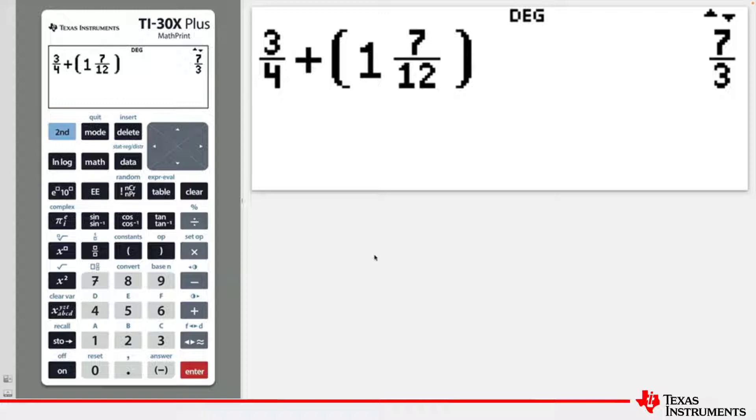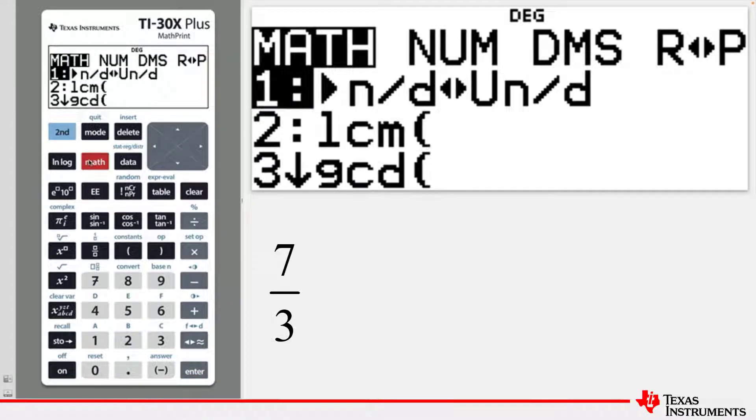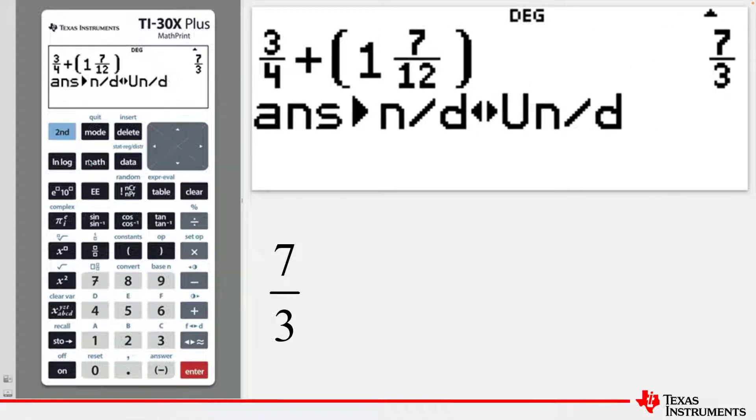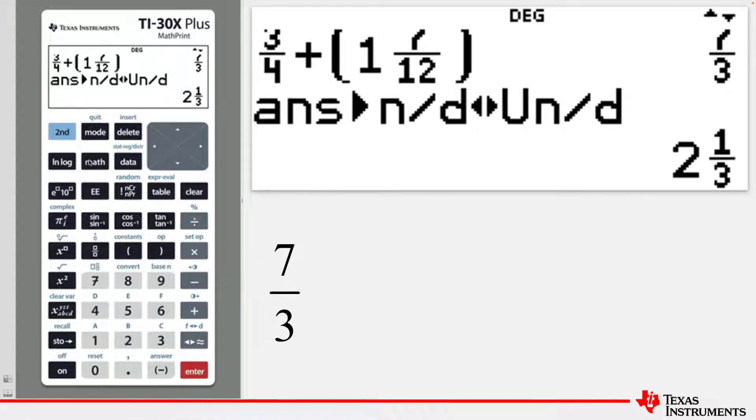To convert an answer, which is an improper fraction, to a mixed number, use the Math key as follows. Choose Option 1, press Enter, and the previous answer is converted from an improper fraction to a mixed number.